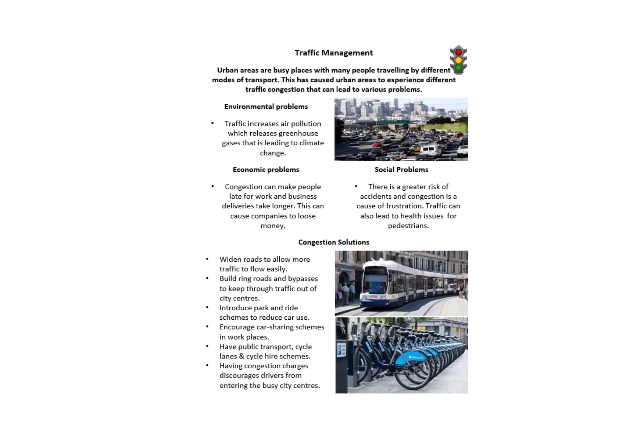Continuing with sustainability, we need to think about traffic — urban areas are particularly busy. This creates environmental problems (air pollution), economic problems (people being late for work), and social problems (greater risk of accidents). Solutions include widening roads, building ring roads and bypasses, and introducing congestion charges. The Curitiba case study uses articulated buses taking 4,000 passengers a day, with one ticket taking you anywhere in the city. They also run a waste management green exchange where people bring rubbish, get it weighed, and swap it for leftover food.